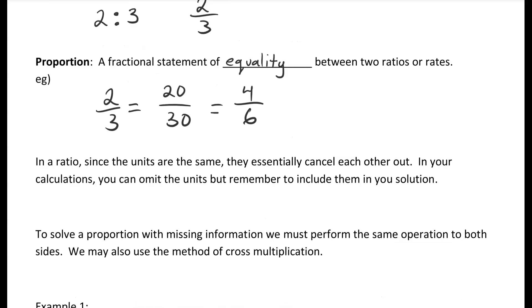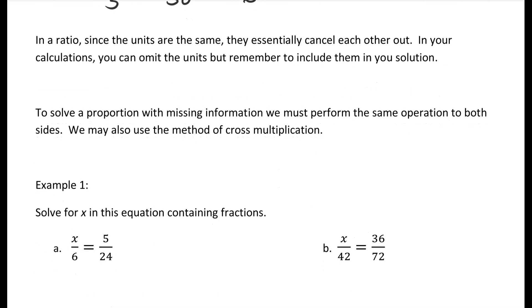In a ratio, since the units are the same, they essentially cancel each other out. In your calculations you can omit the units but remember to include them in your solution. To solve a proportion with missing information, we must perform the same operation to both sides. We may also use the method of cross multiplication.